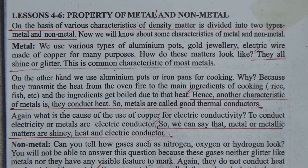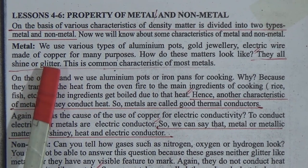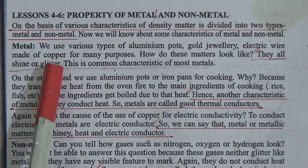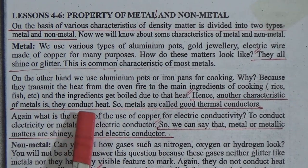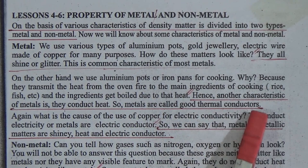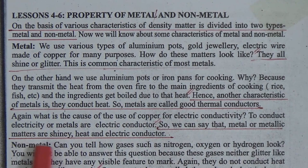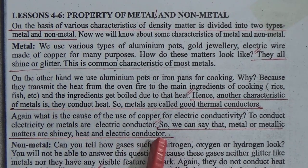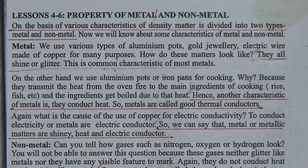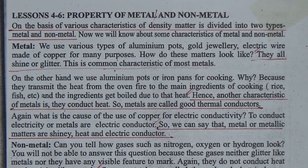Metals are shiny and glittery — that is the common characteristic of metal. Another characteristic is that metals can conduct heat, so they are called good thermal conductors. Metals are also electrical conductors, meaning they can transmit electricity from one place to another. Examples include copper, silver, and gold, which are used for conducting electricity.